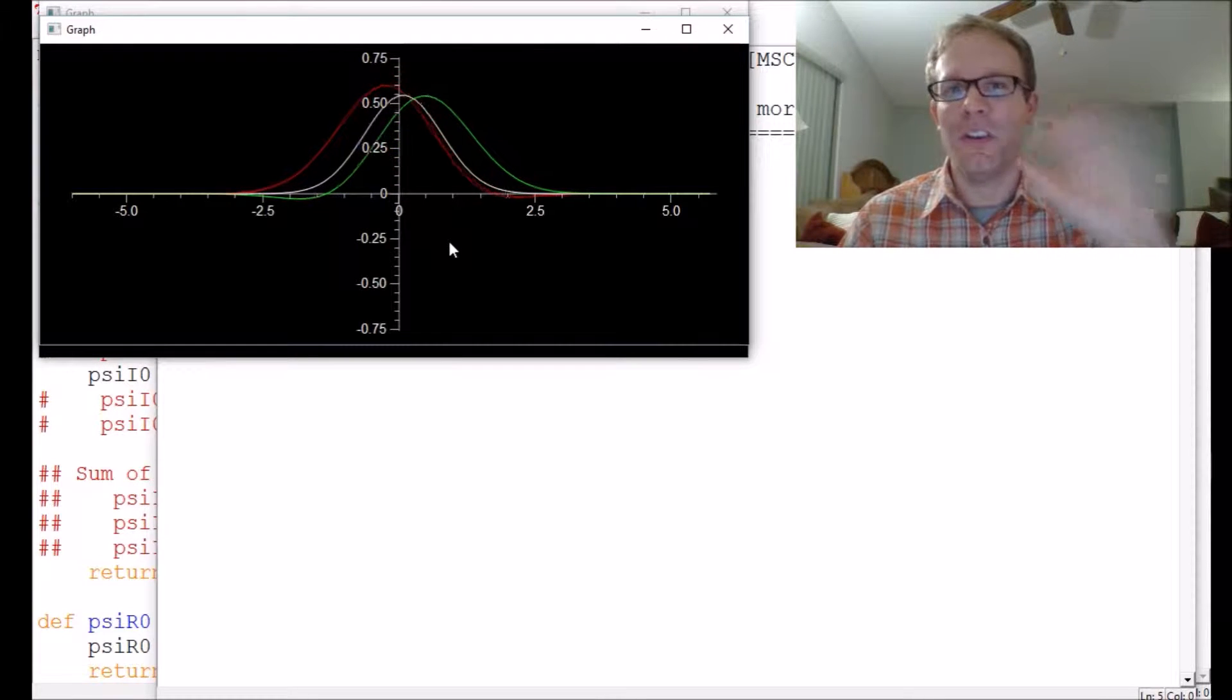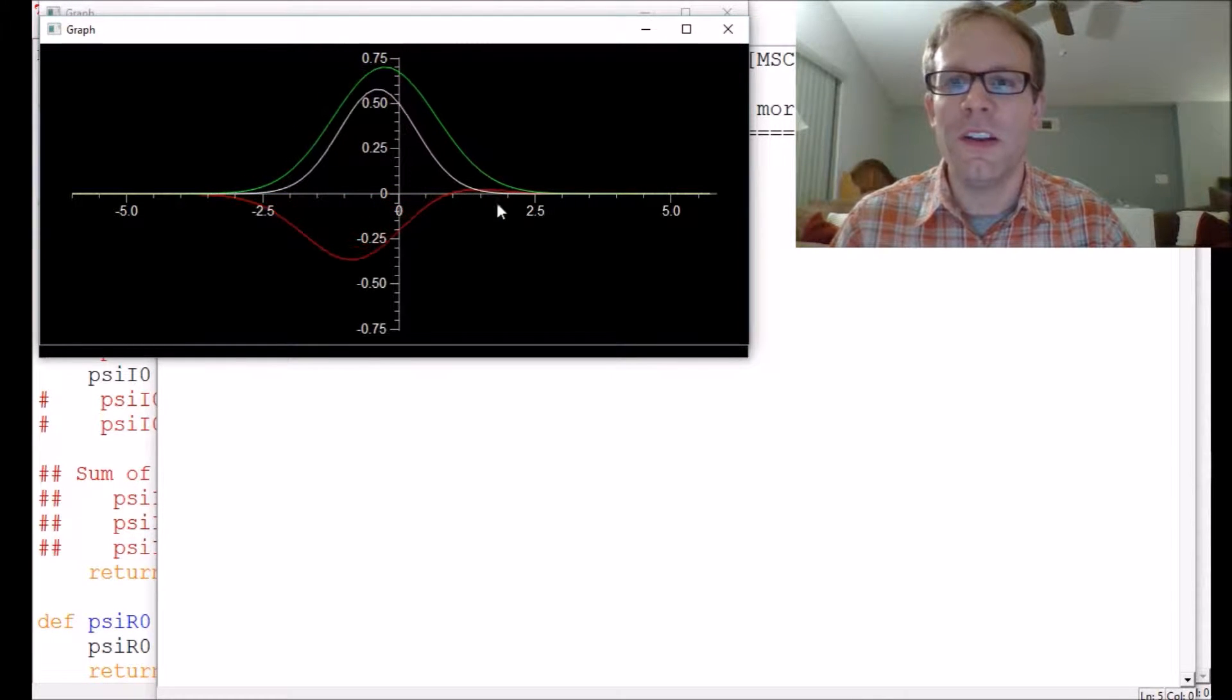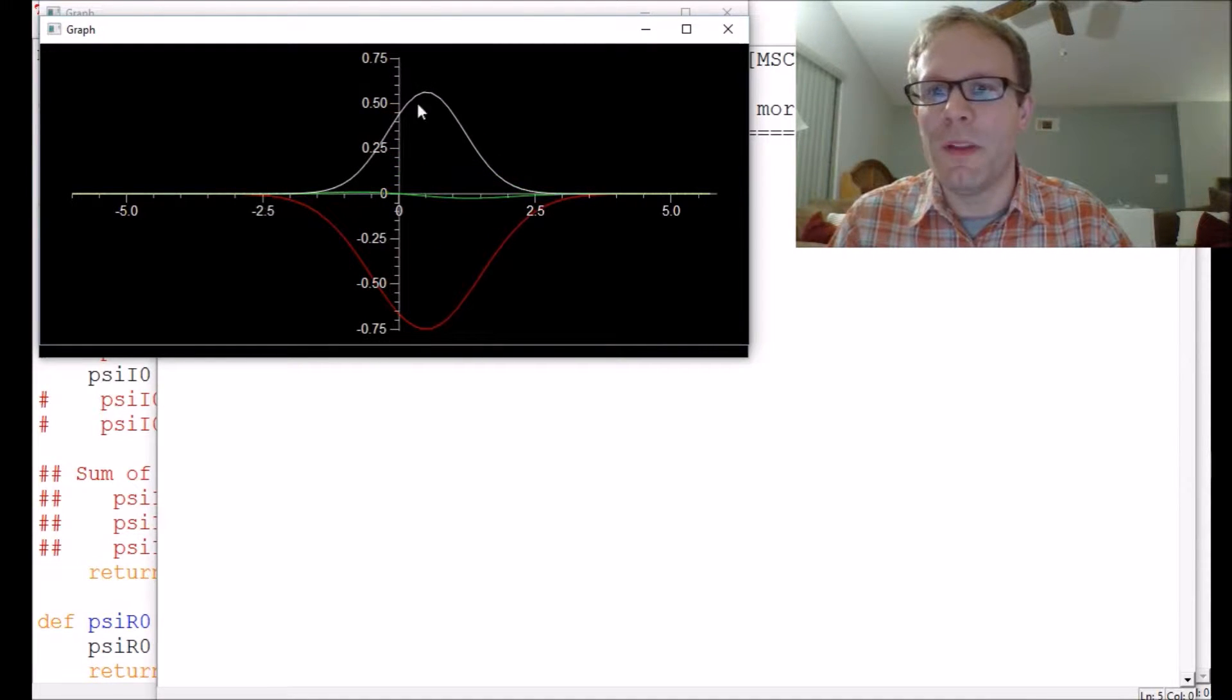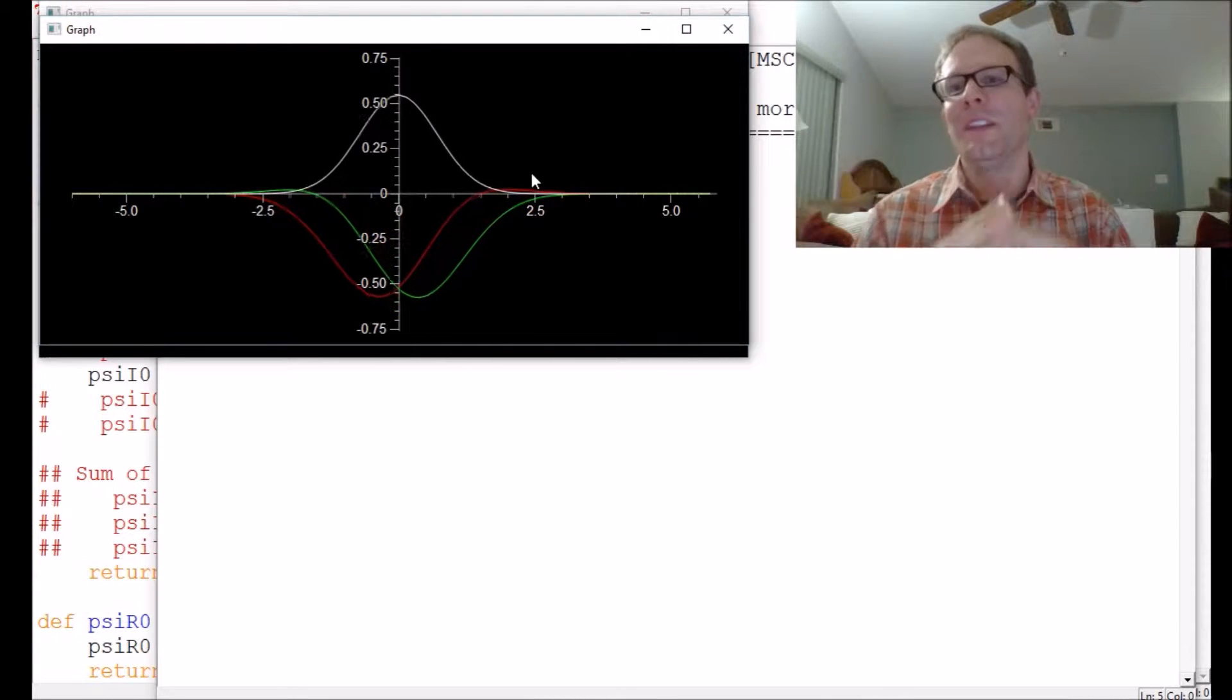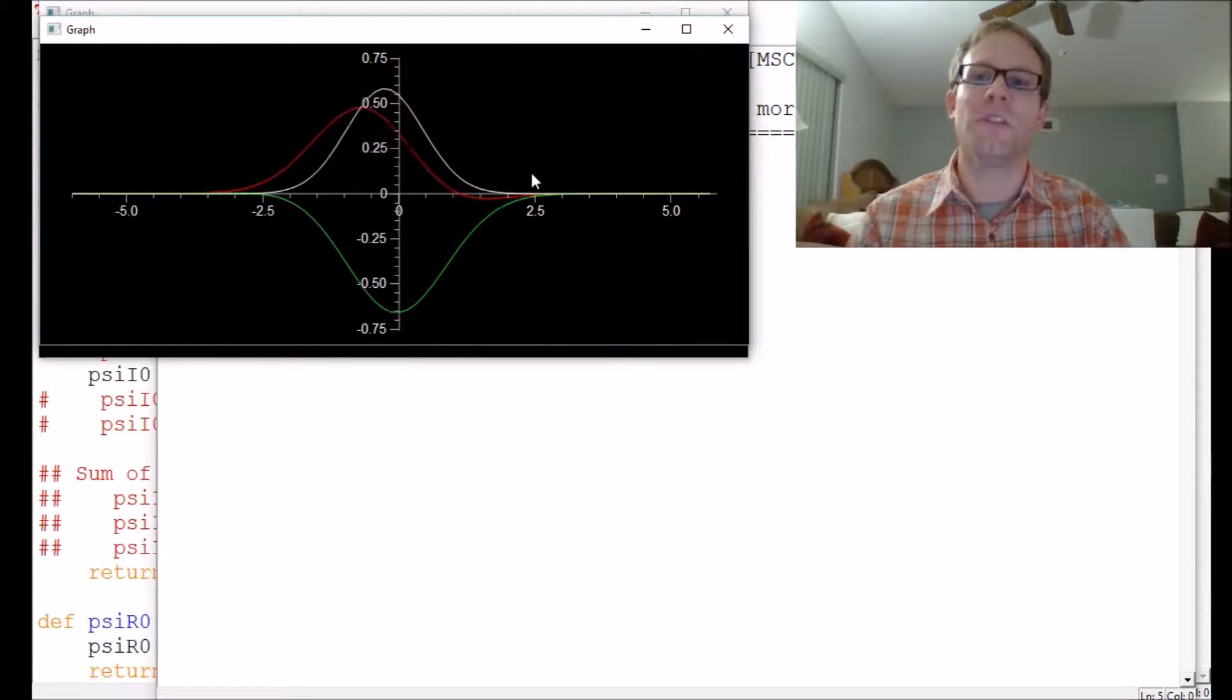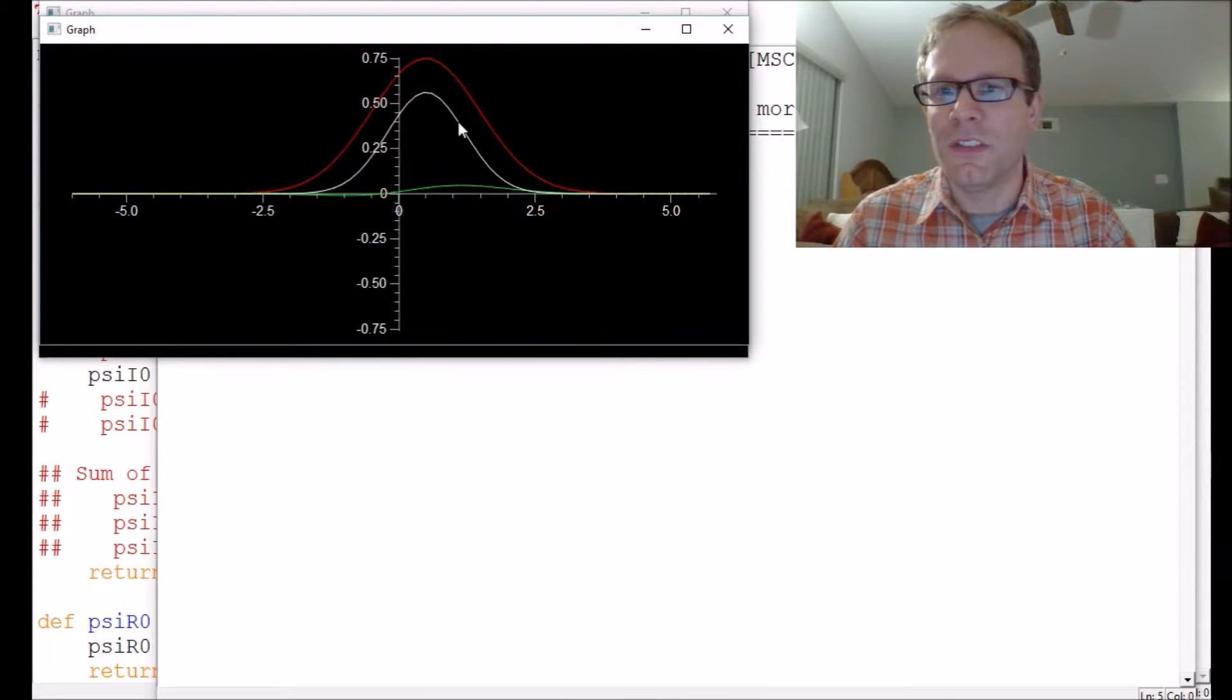It's taking the Schrödinger equation itself and directly solving that. It's also calculating for us in the white curve here the modulus of the wave function squared, so this is the probability density. What you see as this thing moves back and forth is you're seeing the probability of where you would find the particle. It's this little bell shape here.